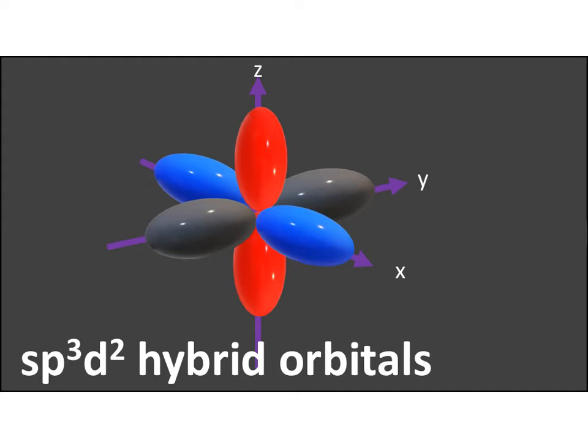So again, hopefully you can see that we have got the two lobes. So we have one orbital here, one here, along the z. We have one here, one here, one here, and one here. So we have six hybrid orbitals that will each contain one electron each.